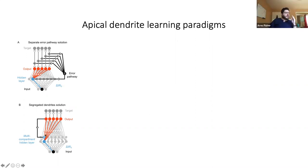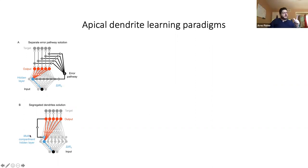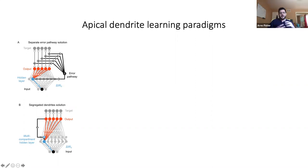They propose the apical dendrite as a way to integrate feedforward and feedback information. The rationale starts with: how do you integrate feedback information to create a local learning rule? Their solution is to create an apical dendrite segment that receives feedback from higher layers.